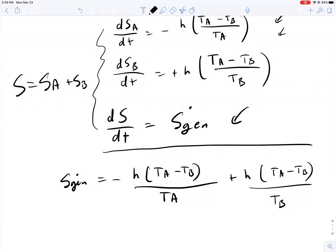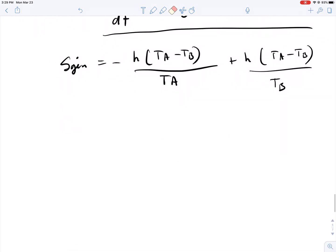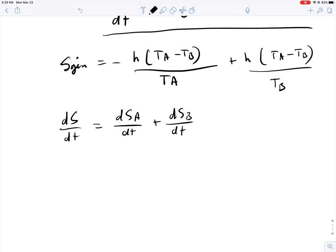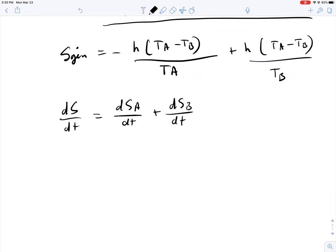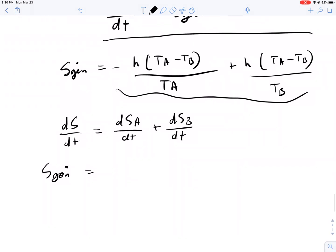My bad. We sum these two. Let me just write it out. These notes will be raw and unedited. DSDT equals DSADT plus DSBDT. So, on the left-hand side, this becomes equals to SGEN dot, and this equals these two terms that we have on the right-hand side.